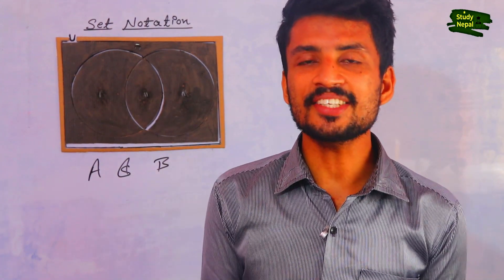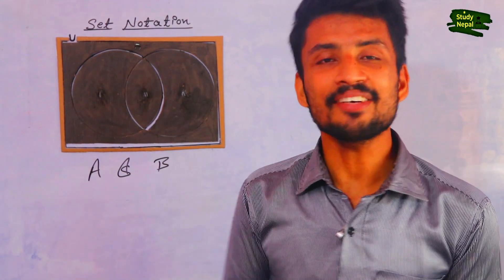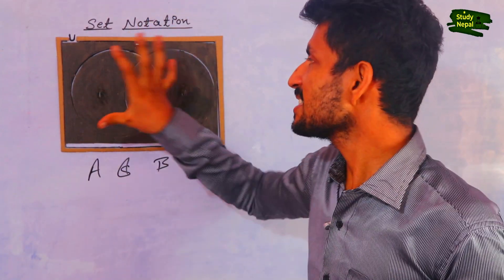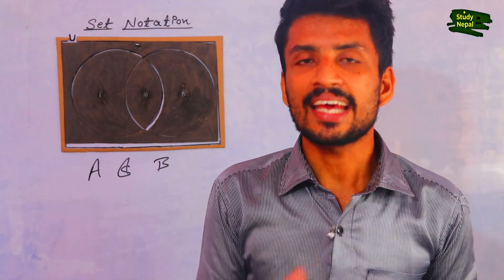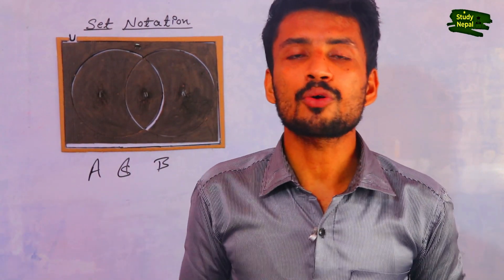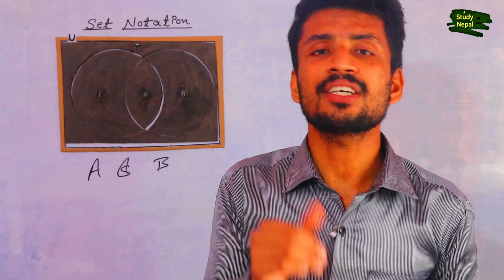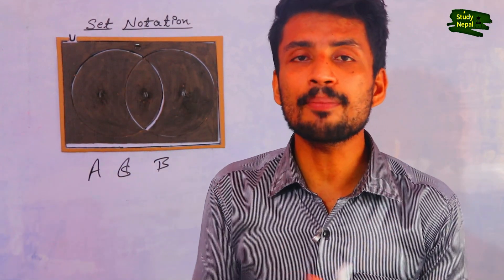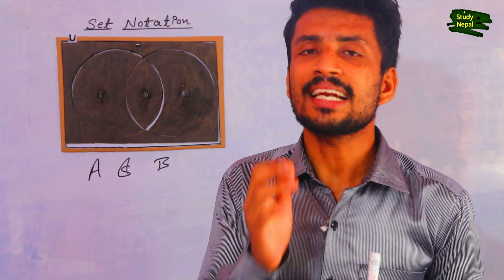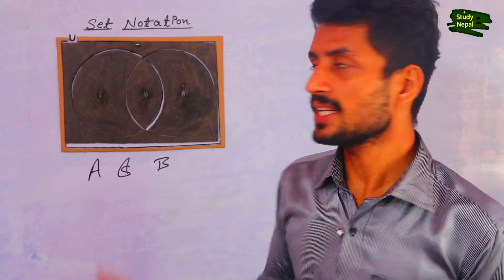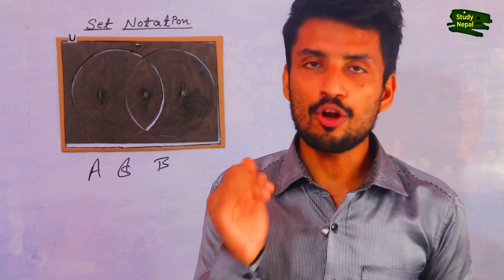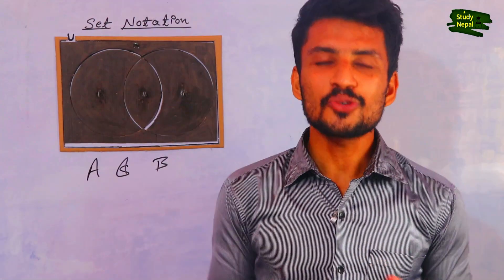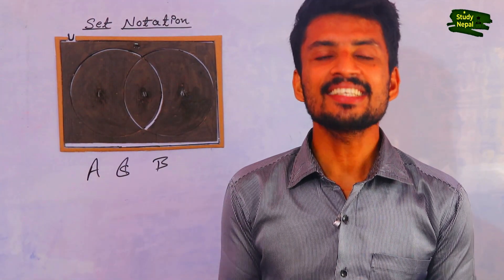Hello, my dear students. Welcome to the Journal Study in Nepal. Today I have a particularly different topic: set notation. Here I have a universal set, and inside this universal set there are two sets, A and B. The questions used to ask you to shade different portions like A, B, the intersection part, the union part, and the complement part. I am going to show all these shading parts today by using this cardboard, one by one, so let's start this video.